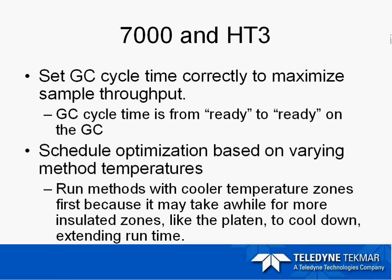Moving on to topics common to both the 7000 and the HT3: make sure the GC cycle time is set correctly to maximize sample throughput. We define the GC cycle time as ready to ready on the GC. If you have a 16-minute GC run time, give it a couple extra minutes to get back to the ready state for the next sample. Also optimize your schedule based on varying method parameters — if running multiple methods, run the methods with cooler temperature zones first because it may take a while for the platen to cool down, which could extend your sample run time.